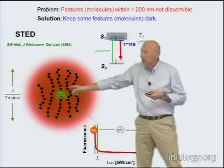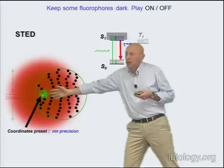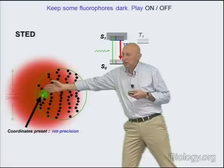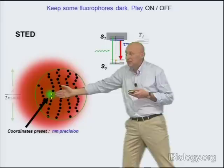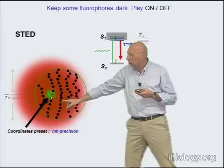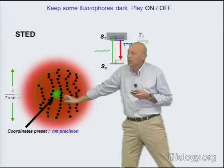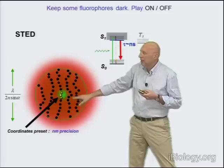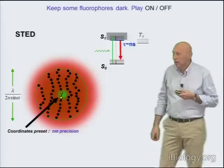Once we have a signal from the central region, we want to see also the rest of the features. The simple answer is we move the beam across the 200-nanometer zone. Now two different molecules are allowed to emit sequentially — these ones emit when those ones are off. We always know where the signal comes from, because the coordinates of emission are preset by the position of the minimum of the doughnut beam's intensity. So we scan the beam across the 200-nanometer zone, generate signal from very tiny regions, and can separate features although they are very close together.